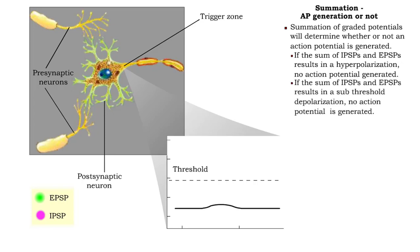Or, IPSPs and EPSPs summate, resulting in a subthreshold depolarization of the membrane. Again, no action potential can be generated.